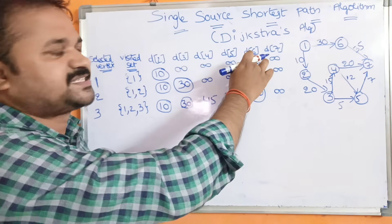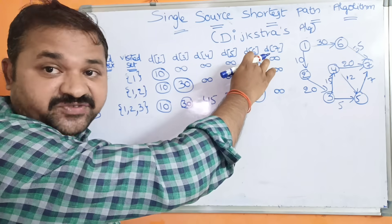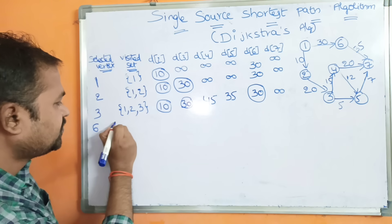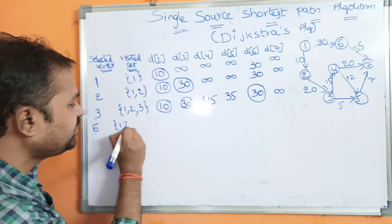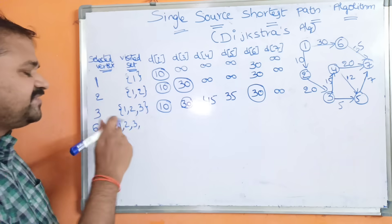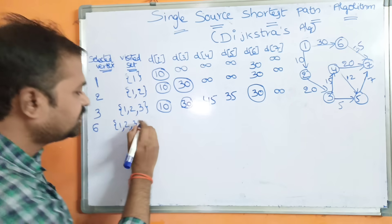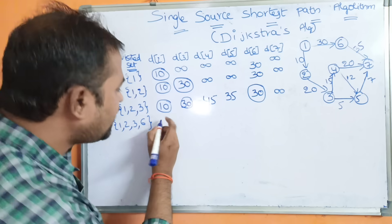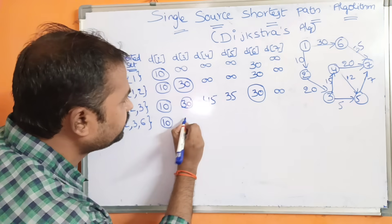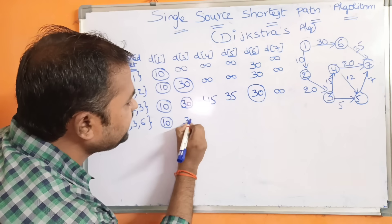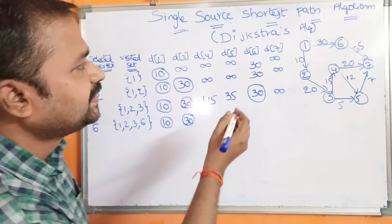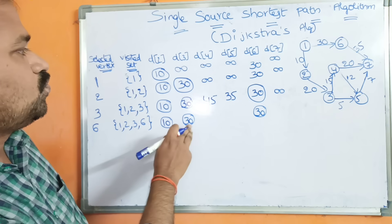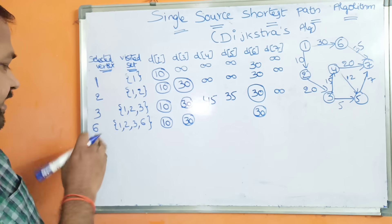So the next vertex becomes 6. The visited set is now {1, 2, 3, 6}. Costs of 2, 3, and 6 are already calculated. Now we have to explore vertex 6. The adjacent vertex of 6 is only vertex 7, with cost of edge 6 to 7 being 35.